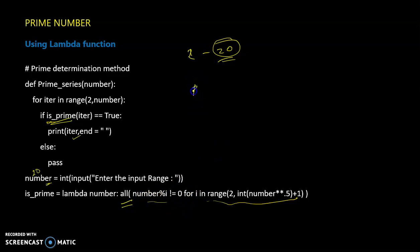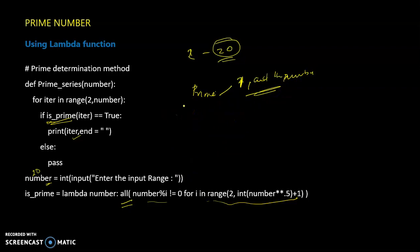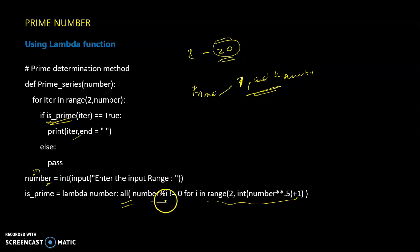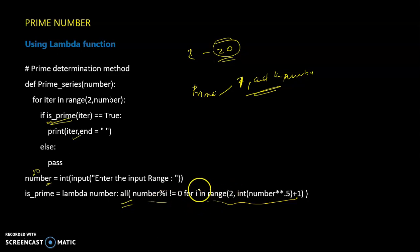If it is not a prime number, it is only divisible by one and the same number. Number mod i not equal to zero means the number is not divisible by i. If all return a true value, then what is the value of i? It is ranging from 2 into number.